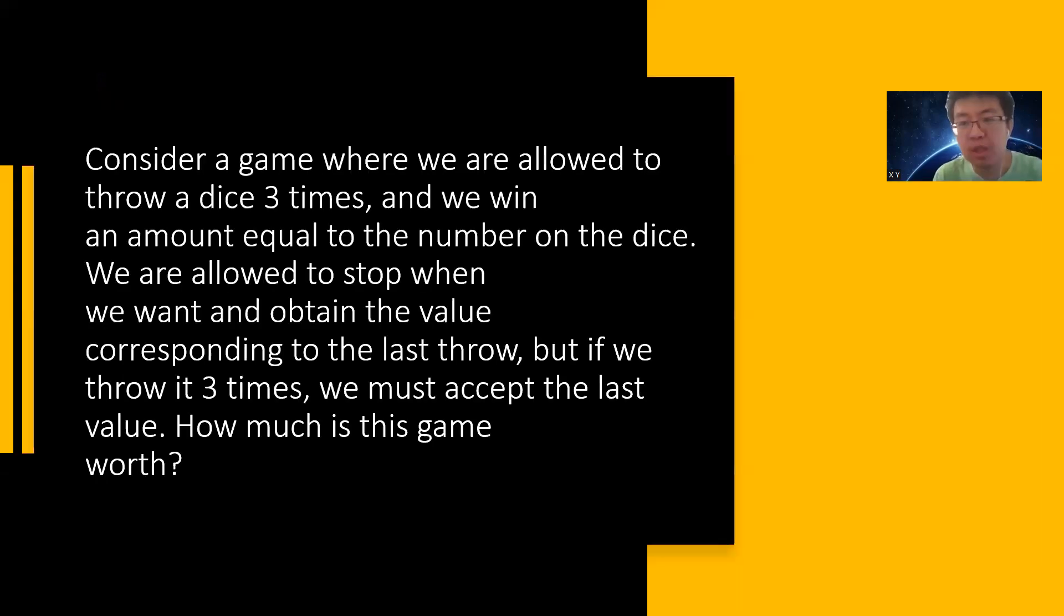This problem is very simple. One common strategy to deal with this problem is you start from a very simple case, and then start to increase. Let's suppose that I only get one dice. What is the expectation value of this dice? Very simple, right? 1 divided by 6, times (1 + 2 + 3 + 4 + 5 + 6) equals 3.5. So if I throw one dice, the last dice will give me 3.5. If I want to throw the last dice, the expectation value I can get is 3.5.